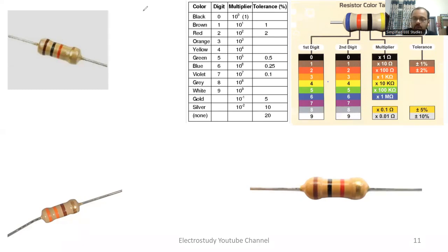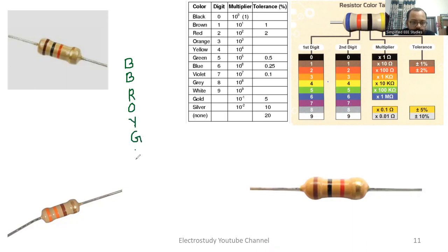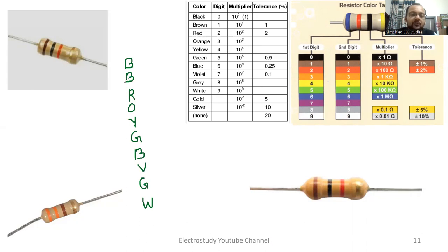First of all I'll be teaching you the shortcut, so please make a note. You have to remember one simple code: B B Roy Great Britain Very Good Wife. So please do remember this code.